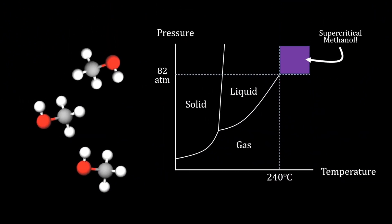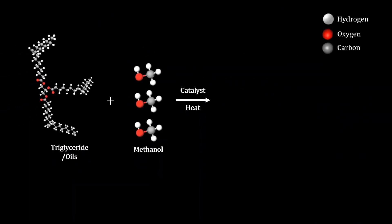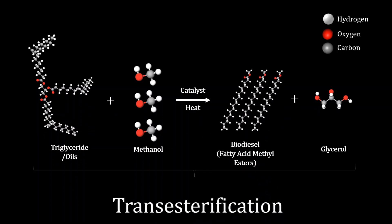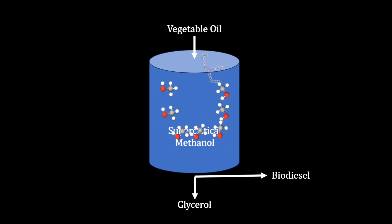Alternatively, supercritical methanol plays a crucial role as a solvent and reactant in certain biodiesel production processes. Ordinarily, we'd need triglycerides or oils, liquid methanol, and a catalyst, and through transesterification reactions we get biodiesel. However, with supercritical methanol, it can act as a solvent dissolving the triglycerides and act as a catalyst, enabling faster reaction rates, higher biodiesel yields, and even reduced waste generation.